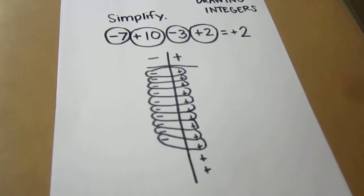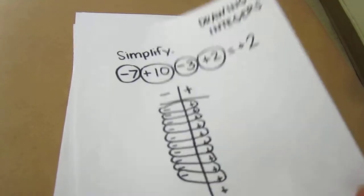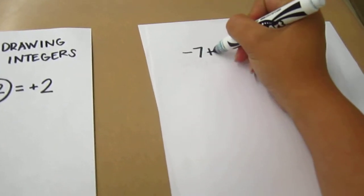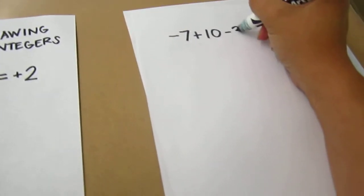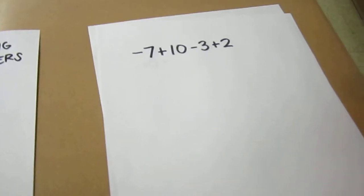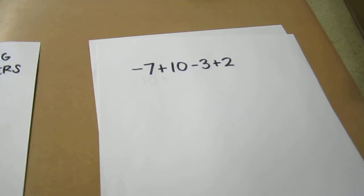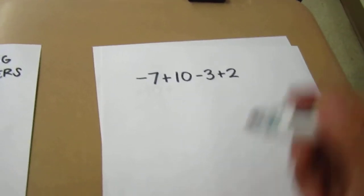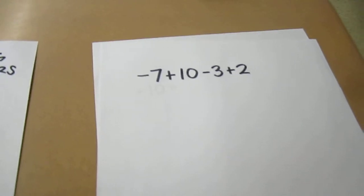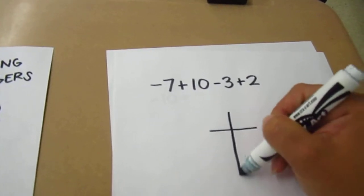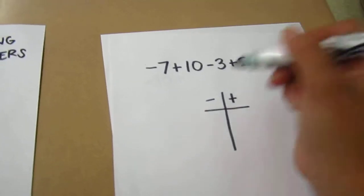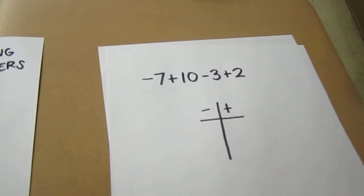The second method I'm going to show you today uses the same expression — negative 7 plus 10 minus 3 plus 2. But this time we won't be drawing out our integers; we're going to use the number to just represent that many negatives or positives. We're going to make a t-chart — our term chart — with negatives on the left and positives on the right.